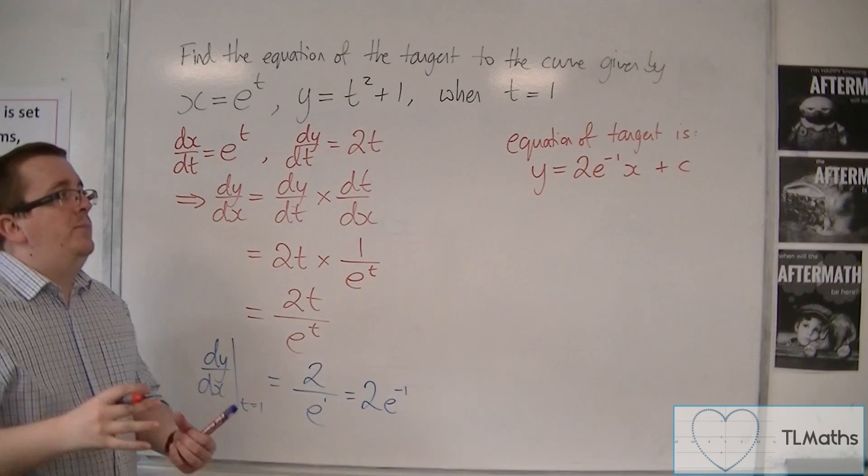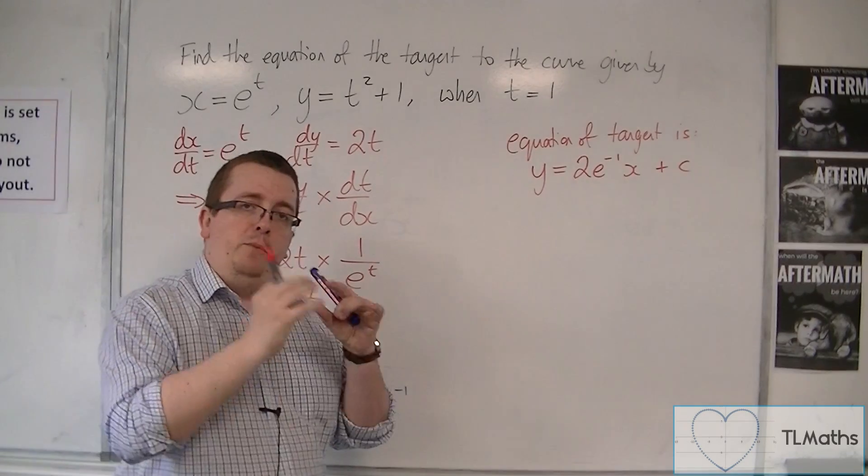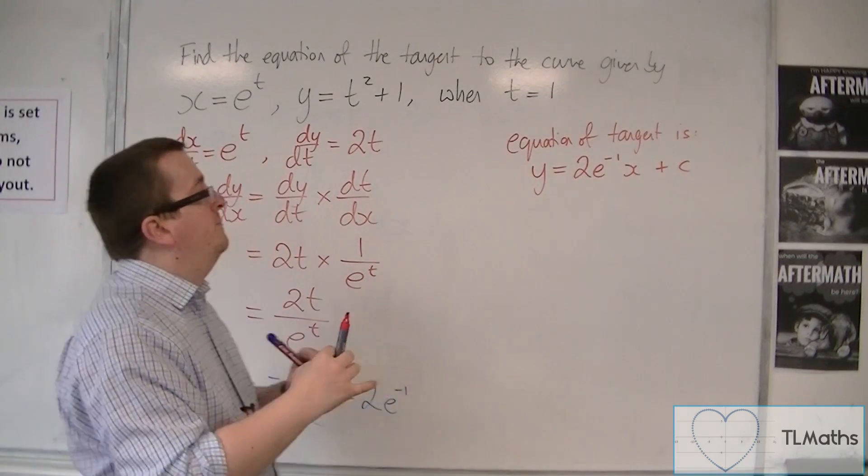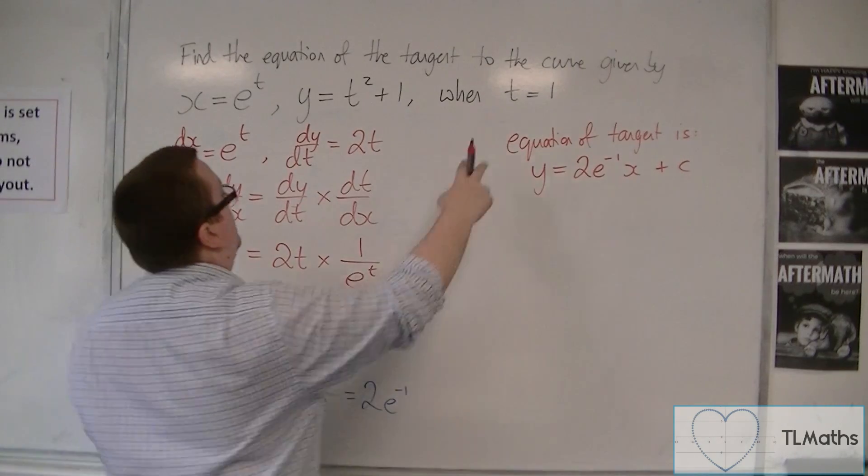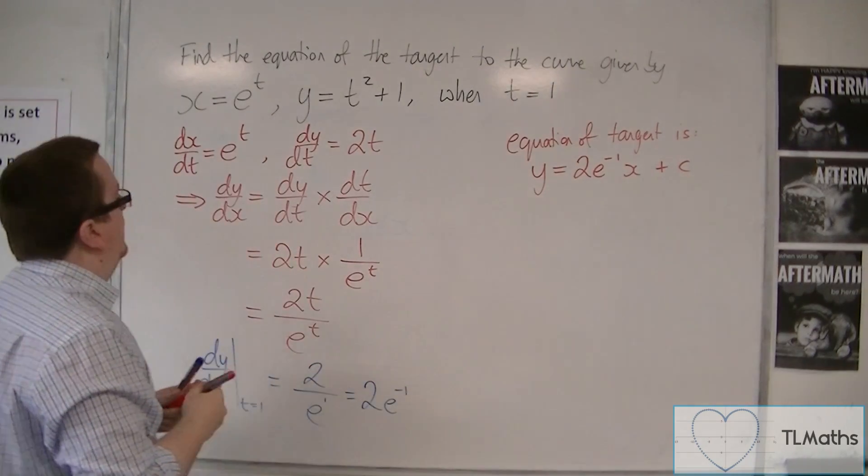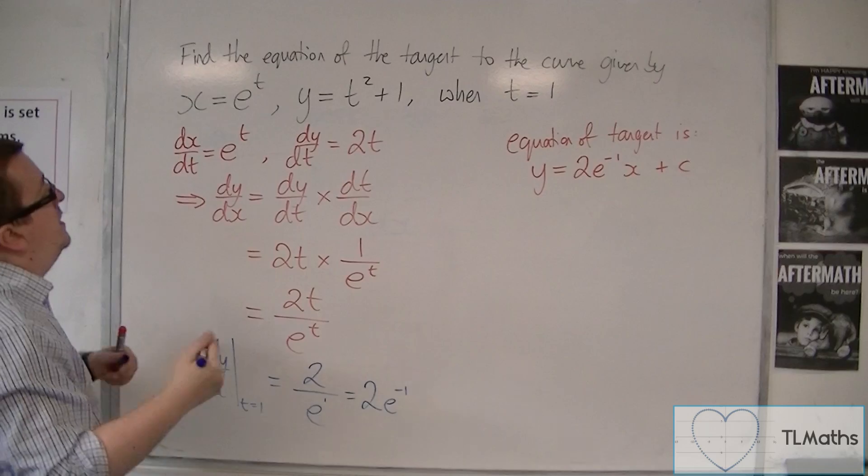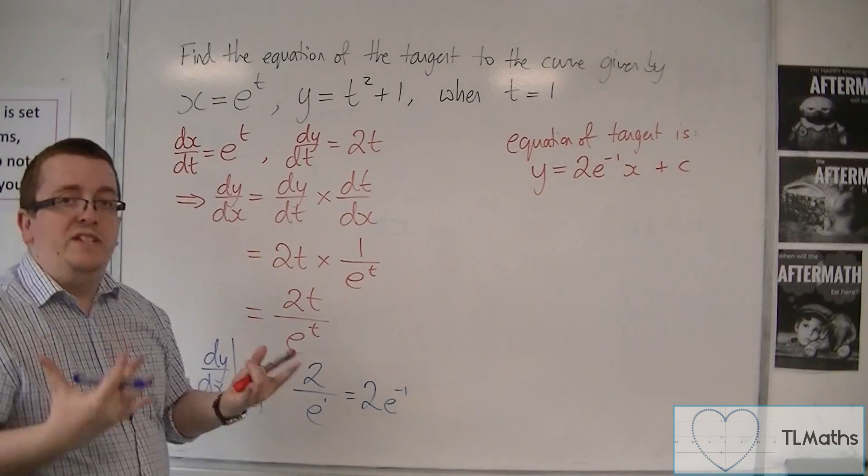So I now need to substitute in the coordinates of the point that I'm considering on the curve. All that I have at the moment, however, is that t is equal to 1. So I need to work out the value of the x and y when t equals 1.